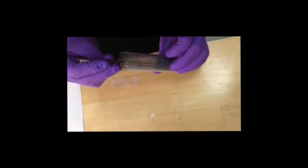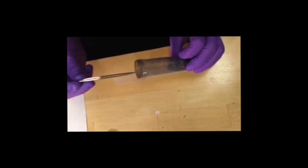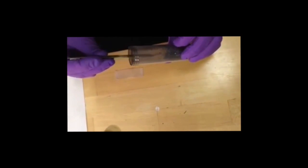Then we take the flakes of graphite, and we want to put about two or three on the edge of the tape.